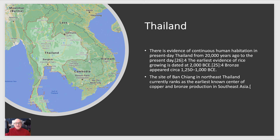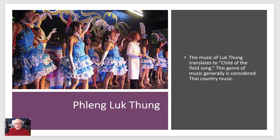Thailand has evidence of continuous human habitation from 20,000 years ago to the present. The earliest evidence of rice growing dates back to 2000 BC, and bronze appeared around 1200 to 1000 BC. The site of Ban Chiang in northeast Thailand currently ranks as the earliest known center of copper and bronze production in Southeast Asia. Thailand has a tremendous musical tradition influenced quite a bit by Chinese and African influences. Phleng Luk Thung, meaning 'the child of the field song,' is generally considered the equivalent of Thai country music, and there's a dance associated with it.